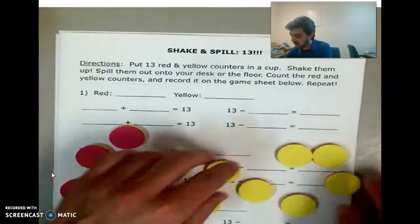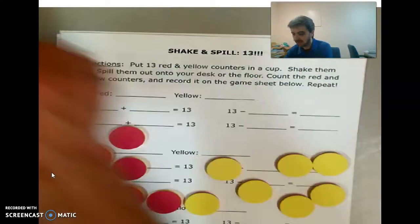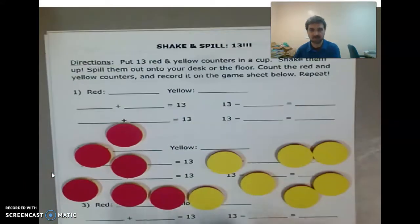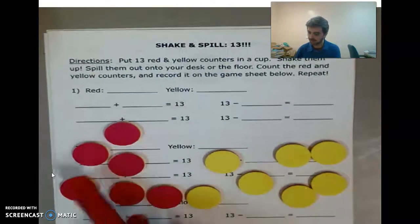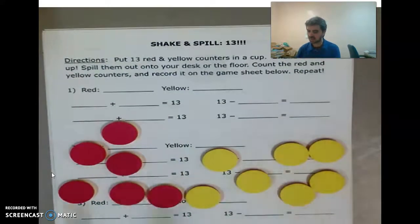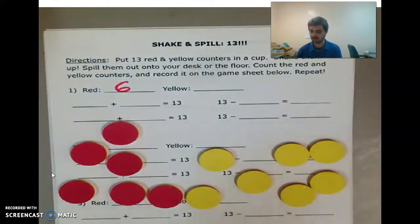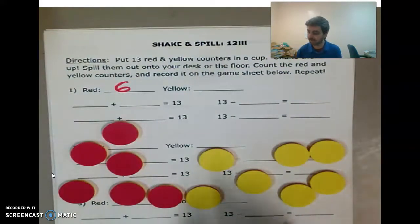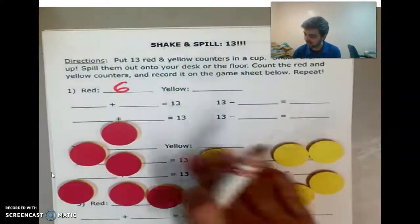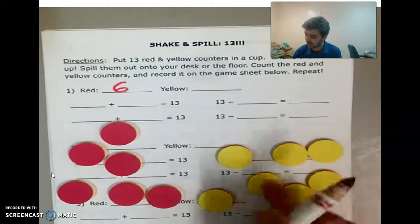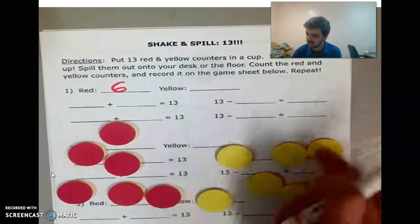So it looks like I have — how many reds? 1, 2, 3, 4, 5, 6. So I have 6 reds. And so when you play, you'll do the exact same thing. And I should have 7 yellows: 1, 2, 3, 4, 5, 6, 7.